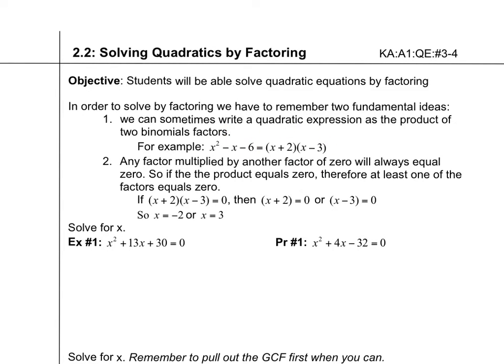And then the other thing is this fundamental idea that if you multiply any factor by 0, you always end up with 0. So what that lets you do is when you get to this factored form equals 0, that tells you that either x plus 2 equals 0 or x minus 3 equals 0. So one of these has to be equal to 0. So what you do is you set them both equal to 0 and then solve both equations.